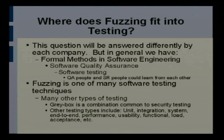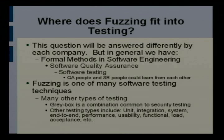How does fuzzing fit into the quality assurance lifecycle? From a research standpoint we want to find bugs, fuzz, find a bug. From a QA standpoint there are formal methods in software engineering: your quality assurance group, your testing group, and fuzzing is just one small piece of that. Fuzzing is kind of gray-box. There's a lot of other testing that should take place: unit, integration, and so on.